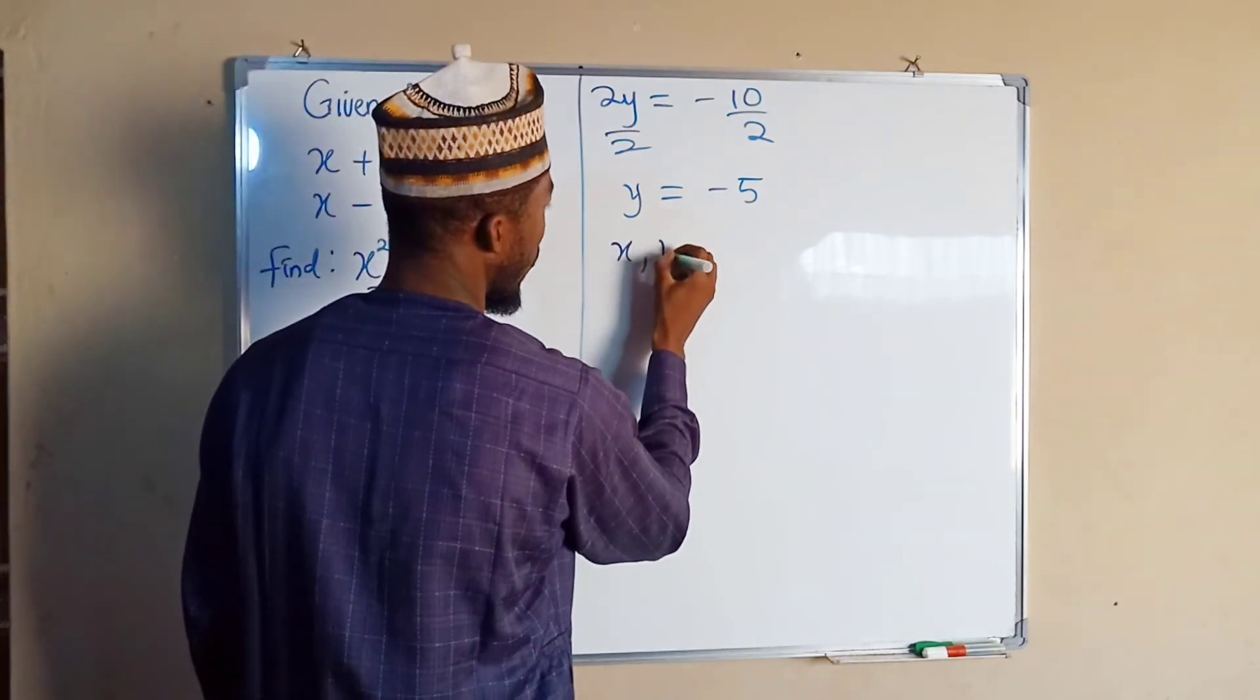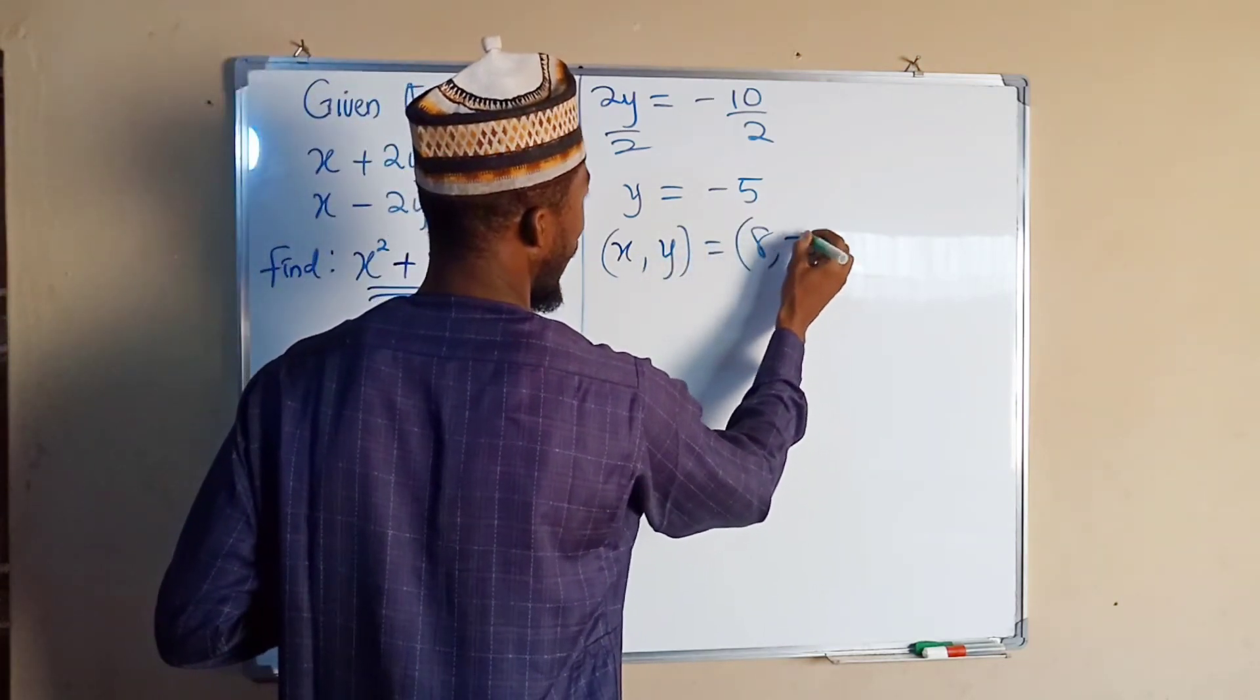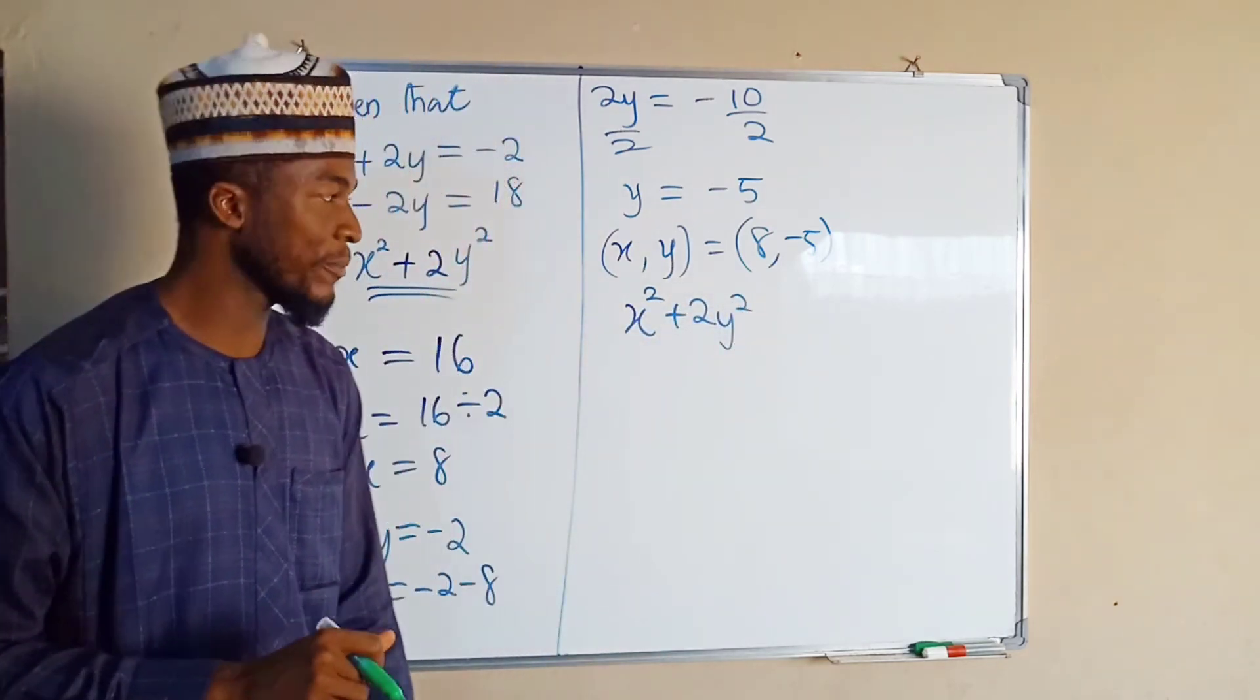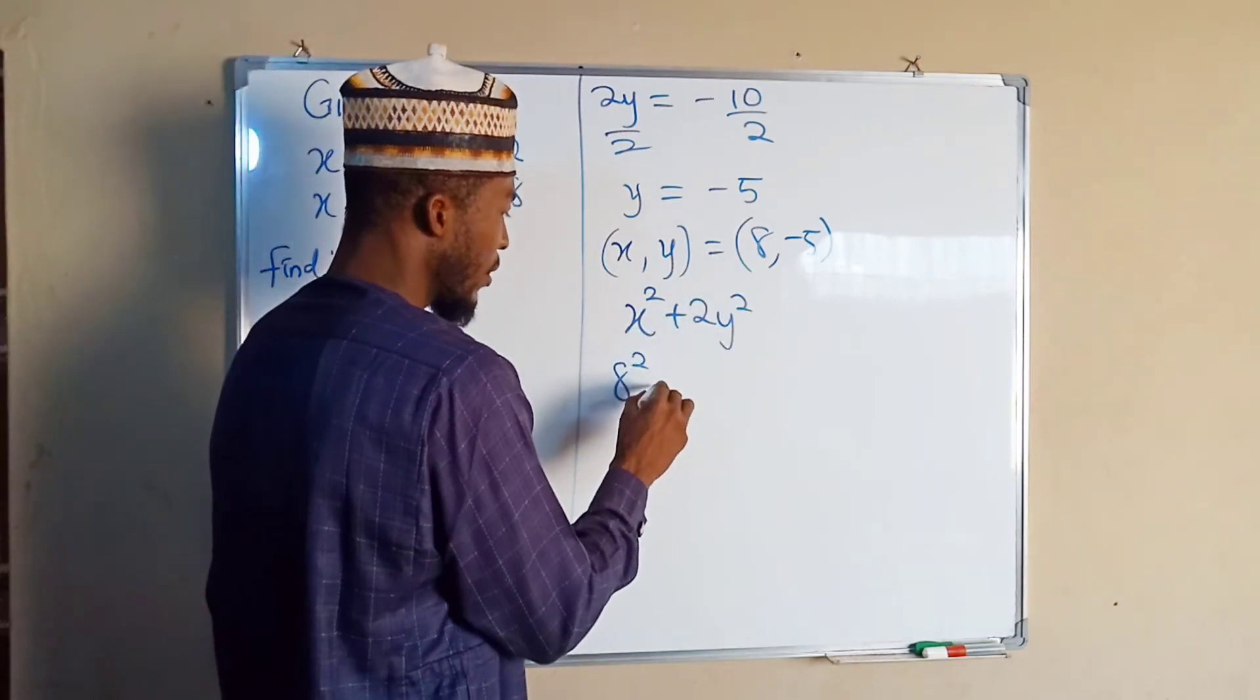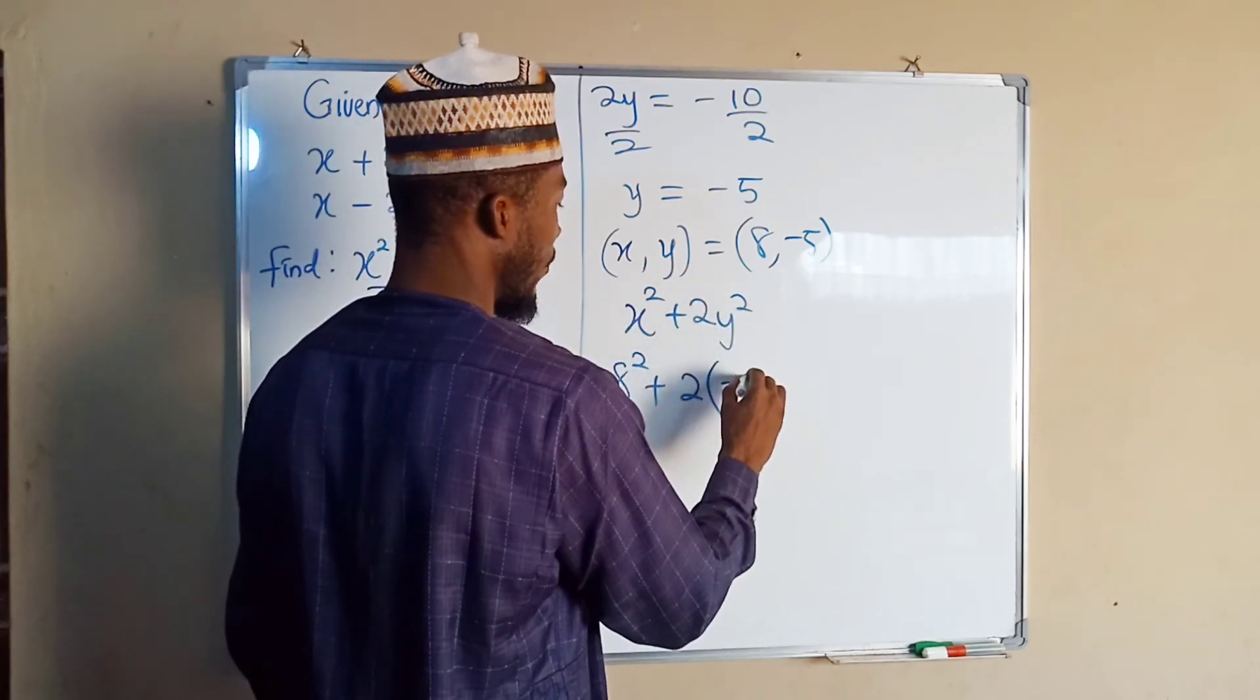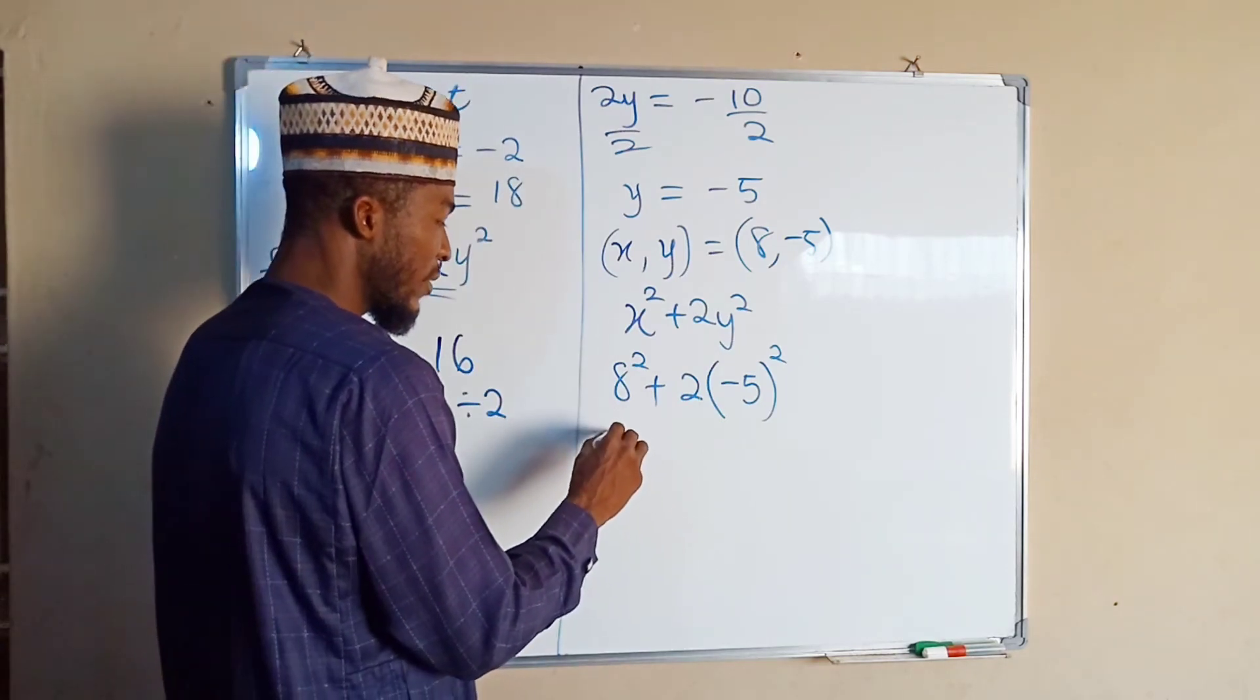Hence we say x, y are equal to: for x we have 8, for y we have -5. x² + 2y², which we are asked to find: we have 8² + 2 times (-5) squared. 8² is 8 times 8, which is 64.